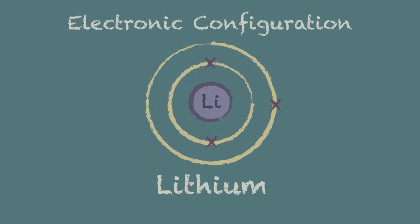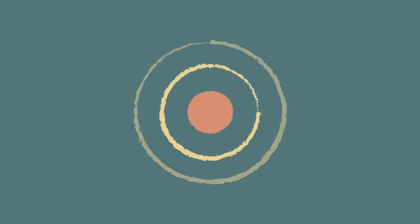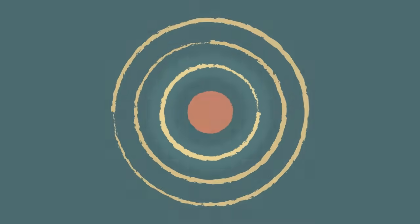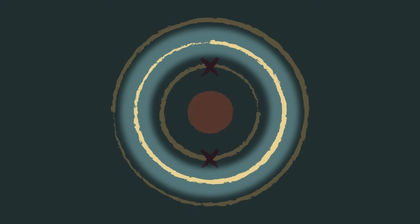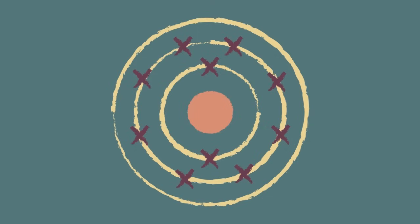The same process of filling up shells applies to larger atoms. You always start with the lowest available shell and whenever a shell is full the next electron to be added goes into the next shell. And that's pretty much it.